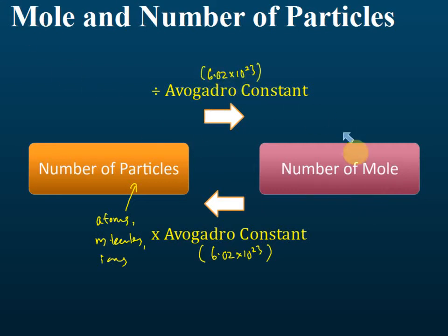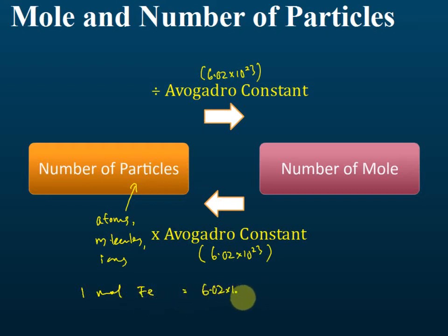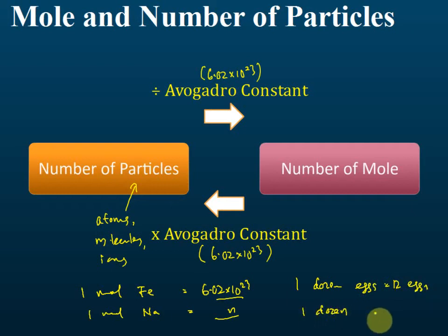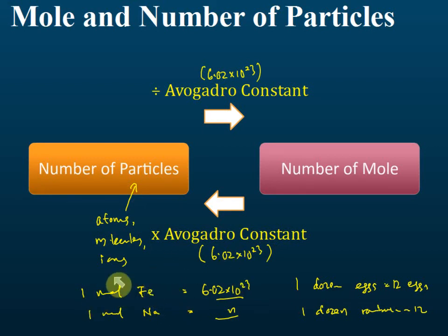This is a summary: one mole of iron is 6.02 × 10²³ particles, and one mole of sodium is also the same. Just like one dozen eggs is 12 eggs and one dozen rambutan is also 12 — it's the same. No matter what the element, one mole always represents the same number of particles.